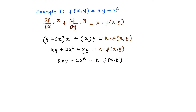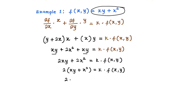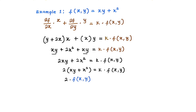We factorize — 2 is common — giving 2(xy + x²) = k·f(x, y). Since we know that xy + x² is exactly f(x, y), we replace it: 2·f(x, y) = k·f(x, y).